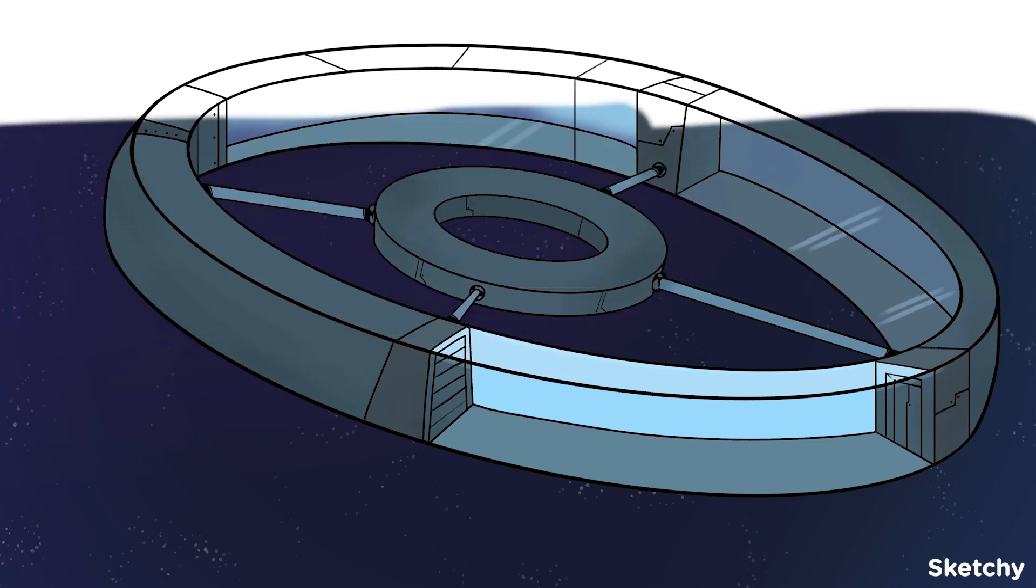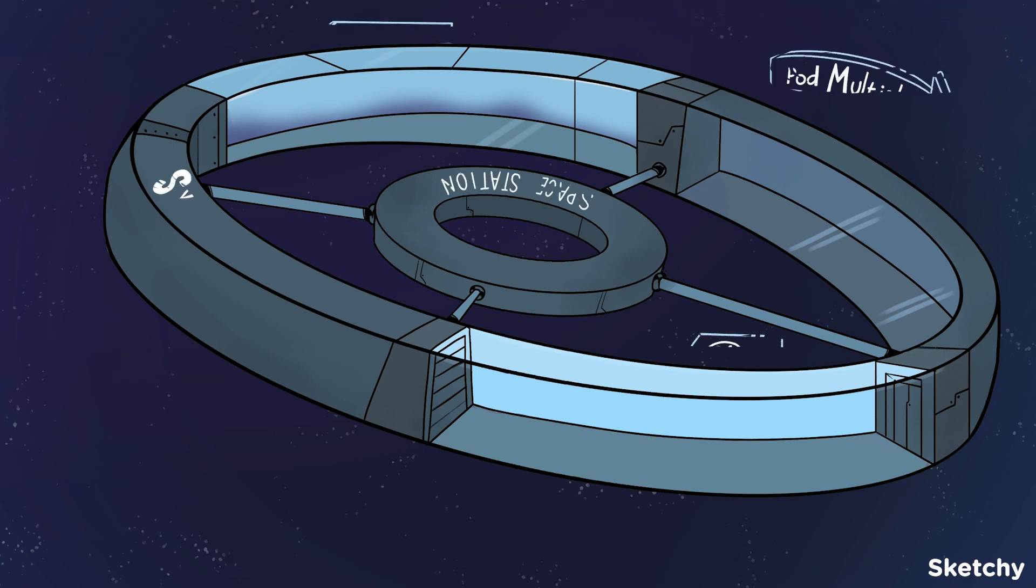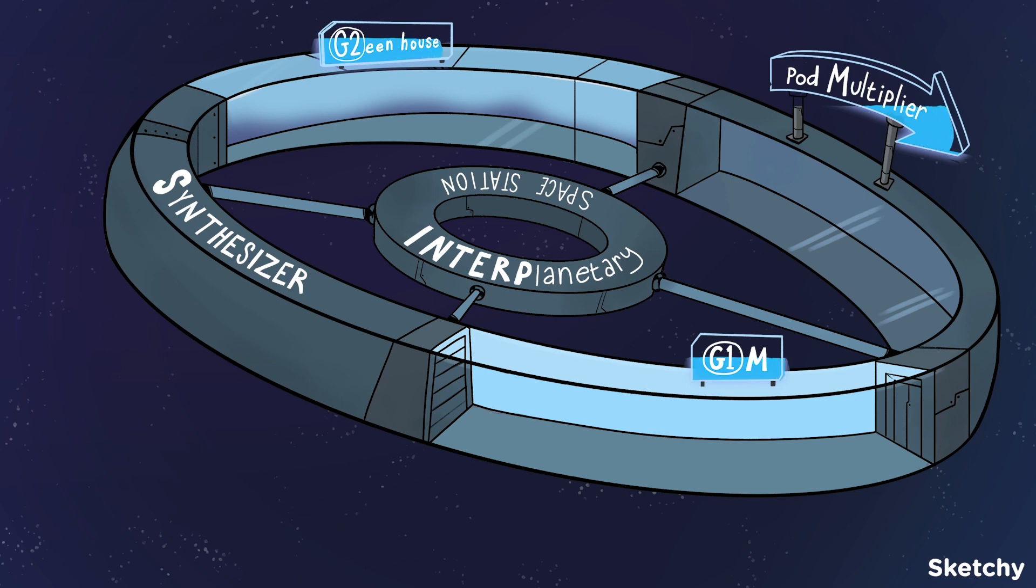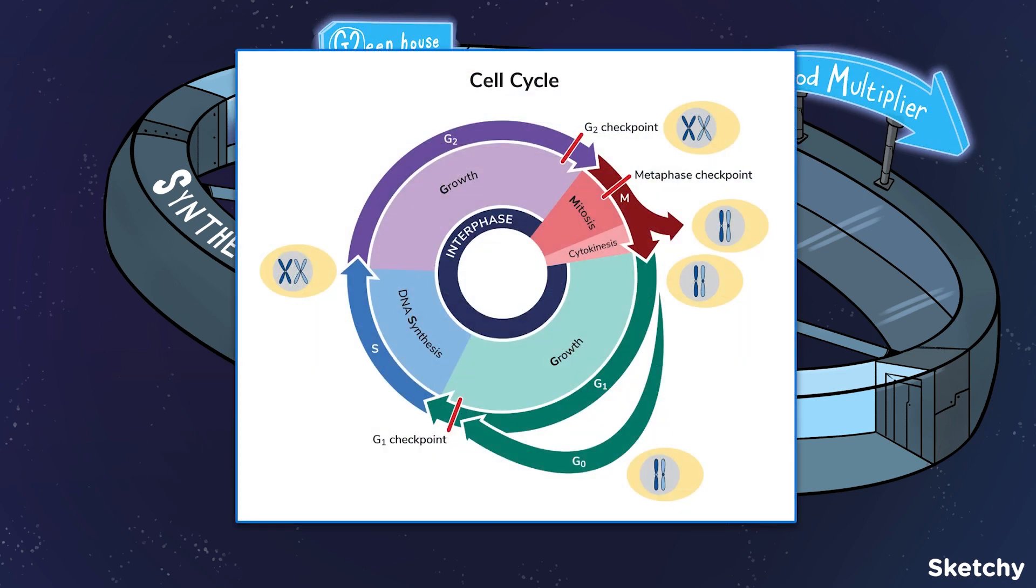So let me tell you everything you need to know about the cell cycle. The cell cycle is a series of events where a eukaryotic cell grows, replicates its genome, and then undergoes division. The cell cycle has two main parts: interphase and the mitotic or M-phase.